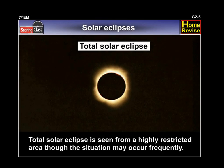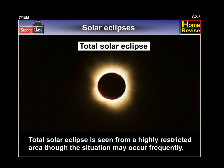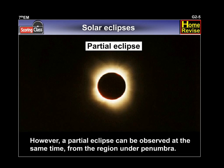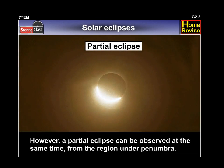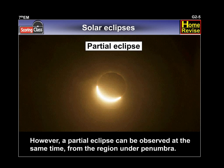Total solar eclipse is seen from a highly restricted area, though the situation may occur frequently. However, a partial eclipse can be observed at the same time from the region under penumbra.